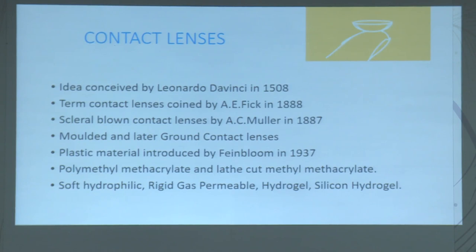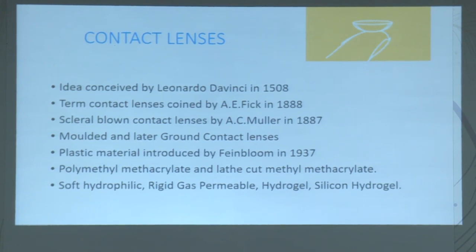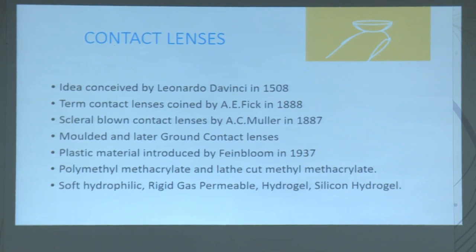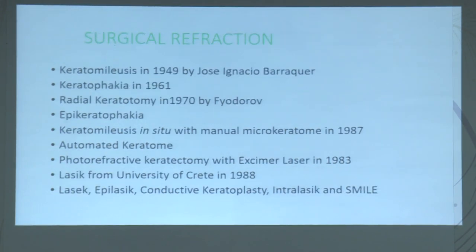Contact lenses: the idea was conceived by Leonardo da Vinci in 1508, to satisfy cosmetic purposes. The term 'contact lenses' was coined by A.E. Fick in 1888. Scleral blown contact lenses were made by A.C. Muller in 1887. Moulded and later ground contact lenses were developed. Plastic material was introduced by Feinblum in 1937. Materials used include polymethyl methacrylate, methyl methacrylate, soft hydrophilic lenses, rigid gas permeable lenses, hydrogel, and silicone hydrogel.